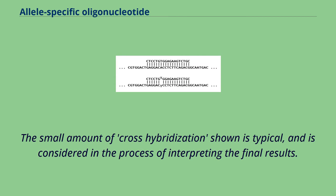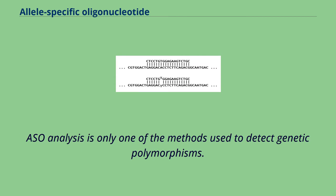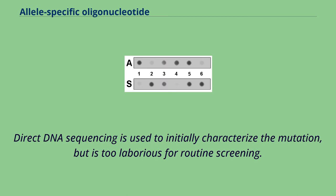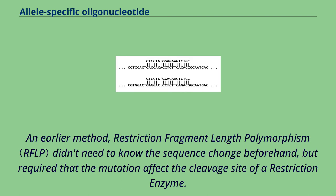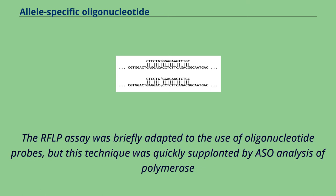ASO analysis is only one of the methods used to detect genetic polymorphisms. Direct DNA sequencing is used to initially characterize the mutation, but is too laborious for routine screening. An earlier method, restriction fragment length polymorphism, didn't need to know the sequence change beforehand, but required that the mutation affect the cleavage site of a restriction enzyme.